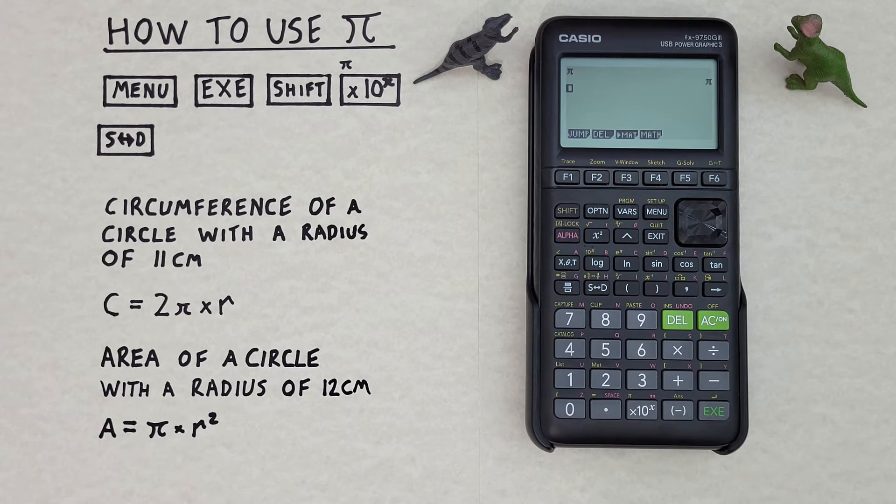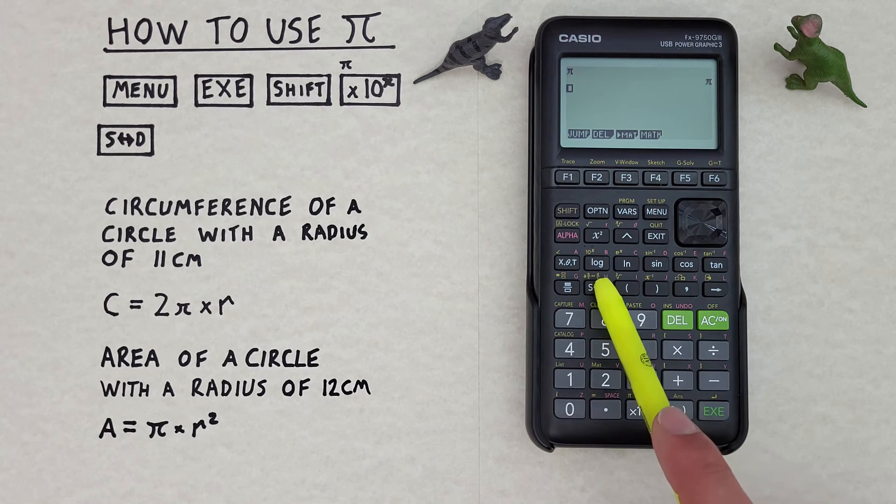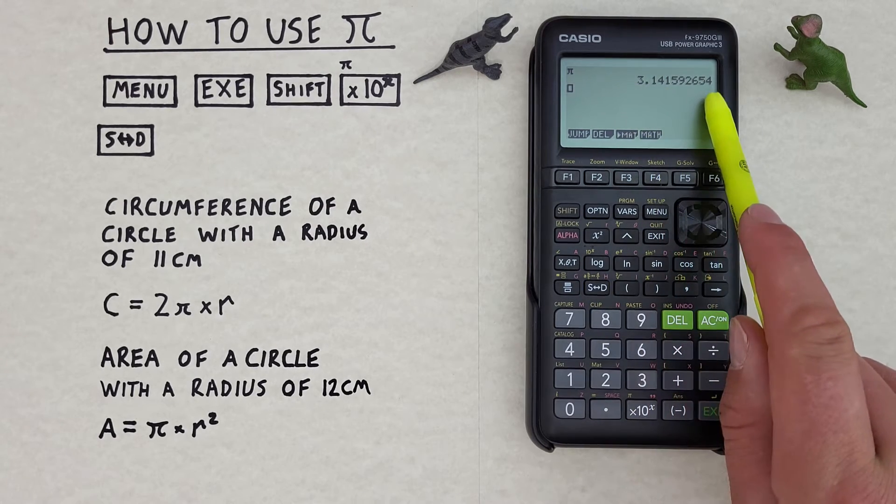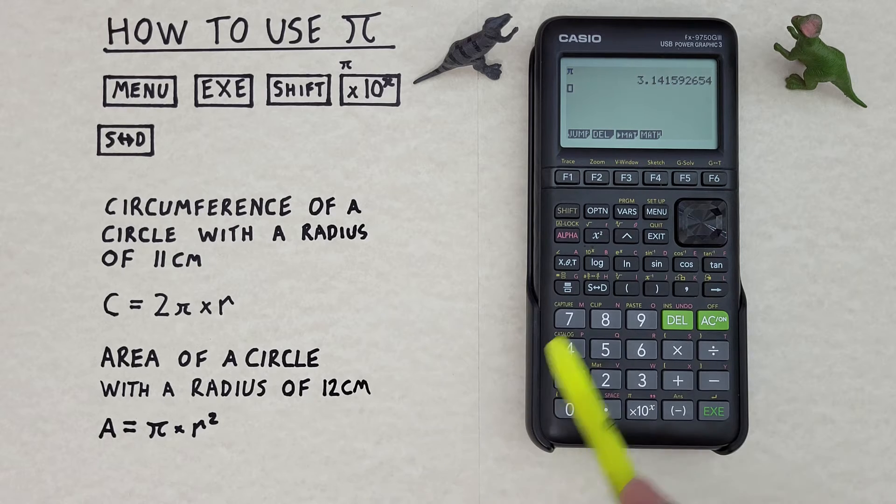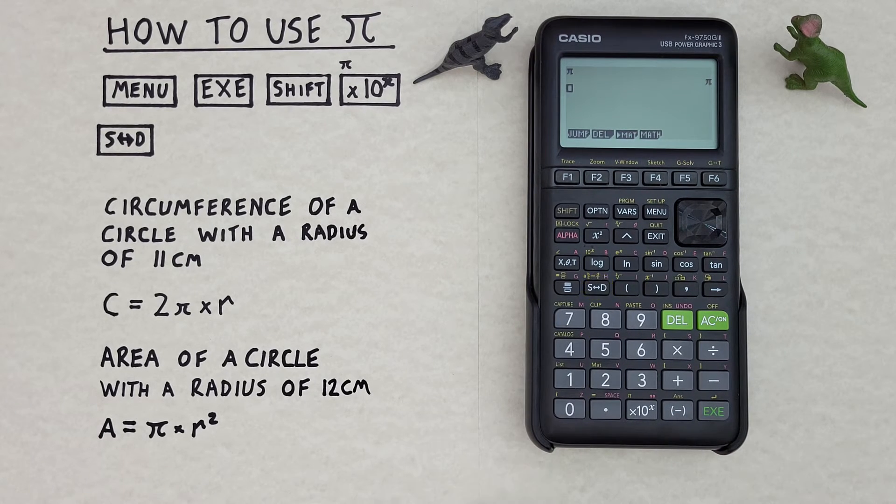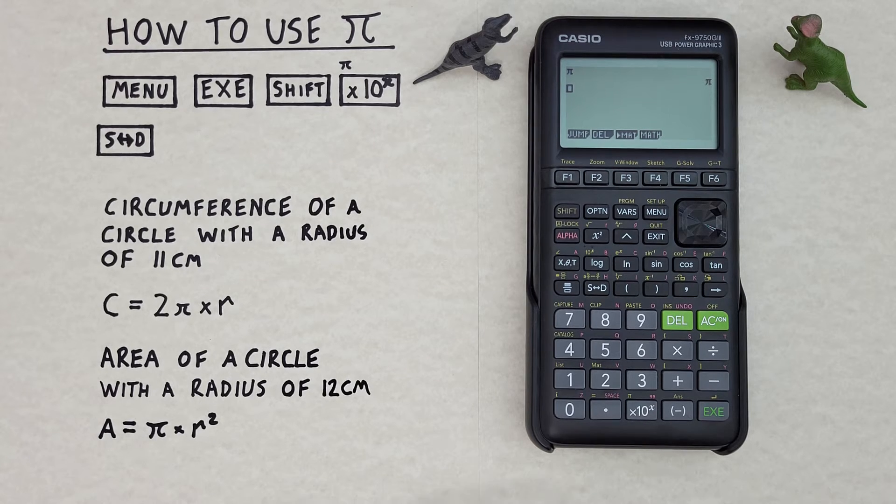We can convert that to the decimal with the S to D or conversion key here, and see we get 3.14159 etc. And we can convert back again with the same S to D key. Pi is useful in a lot of calculations, especially working with circles.